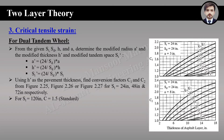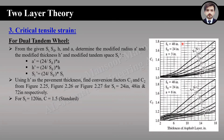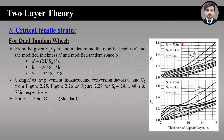Figure 2.25 is for a tandem spacing of 24 inches, figure 2.26 is for a tandem spacing of 48 inches, and figure 2.27 is for a tandem spacing of 72 inches. The selection of figure depends on the modified tandem spacing. If it equals 24 inches use figure 2.25; if 48 inches use figure 2.26; if 72 inches use figure 2.27.